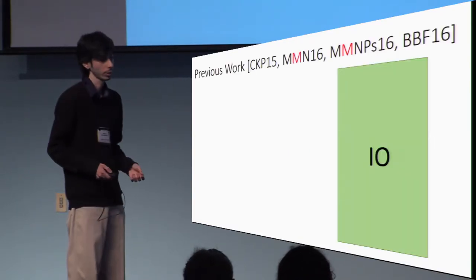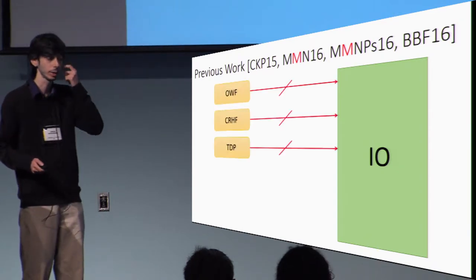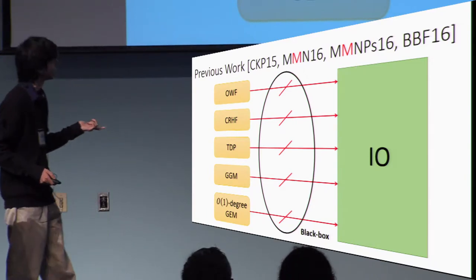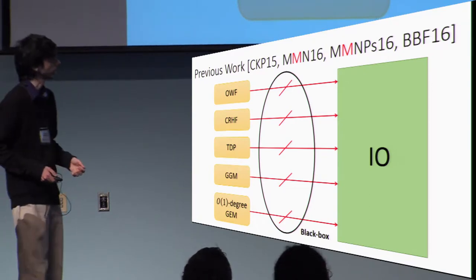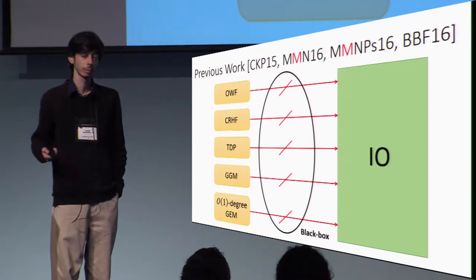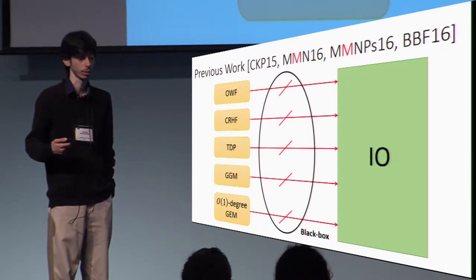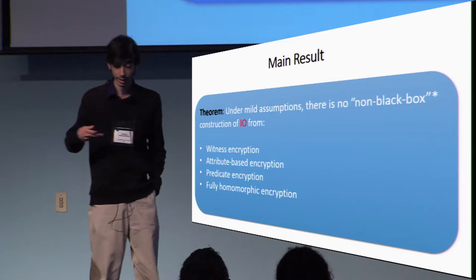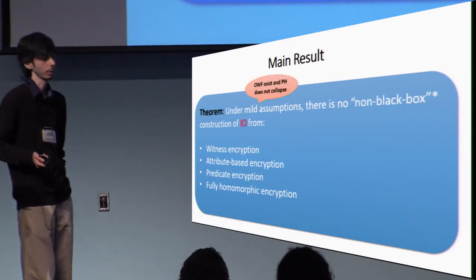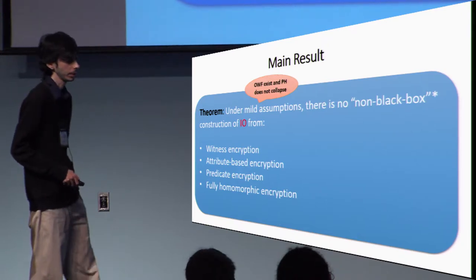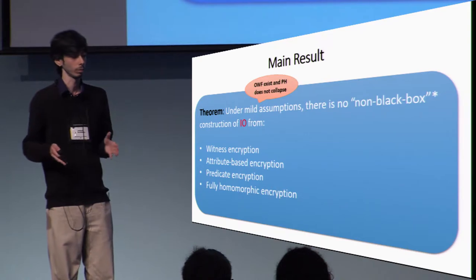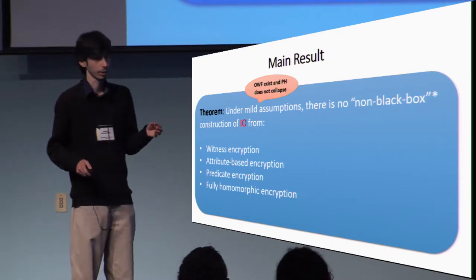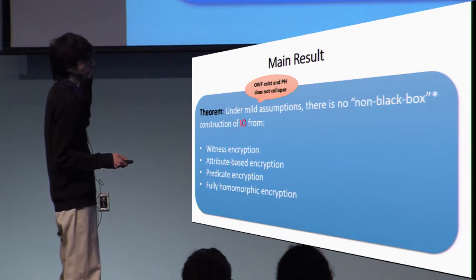A series of works have shown that none of these primitives give us I.O. in a blackbox way, including collision-resistant hash functions, trapdoor permutations, and even the generic group model — anything hard in the generic group model cannot give us I.O. in a blackbox way. In this work, we extend this line of research by showing that, under mild assumptions — namely, that one-way functions exist and that the polynomial hierarchy does not collapse — there is no blackbox construction of I.O. from any of these primitives. The non-blackbox techniques we rule out are especially relevant when dealing with these primitives.